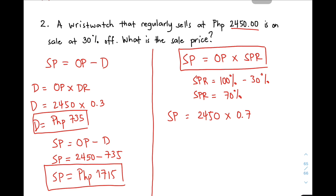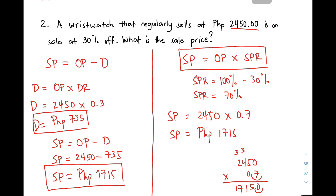Multiply 2,450 × 0.7: 7 times 0 is 0; 7 times 5 is 35, write 5 carry 3; 7 times 4 is 28 plus 3 is 31, write 1 carry 3; 7 times 2 is 14 plus 3 is 17. Count one decimal place — the answer is 1,715. The selling price is 1,715 pesos. As you can see, the answers are equal even though the process is different.